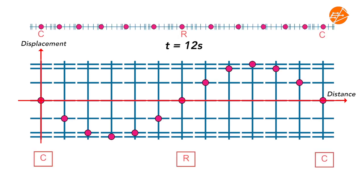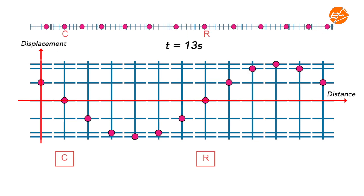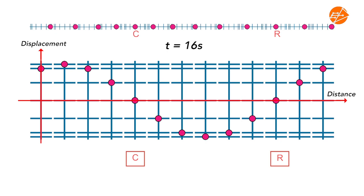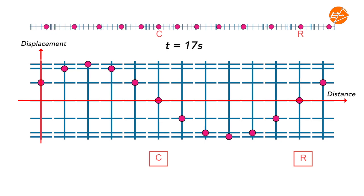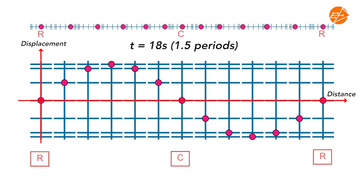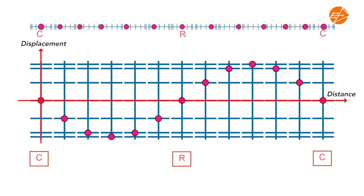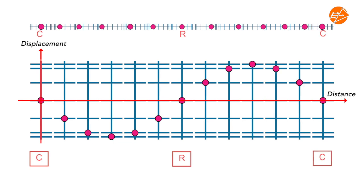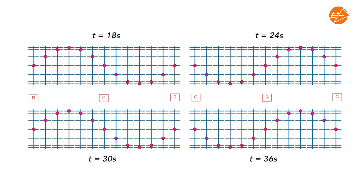These are the positions of all the particles and the centers of compression and rarefaction in the wave at t equal to 12 seconds to t equal to 18 seconds. Likewise, these are the positions at t equal to 24 seconds, 30 seconds, and 36 seconds. Are you able to see the repeated patterns being produced?